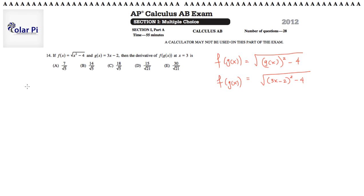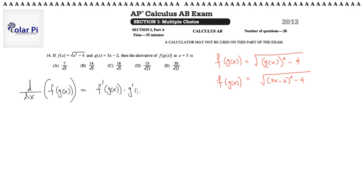Here's another way to approach it: if we are after the derivative of f of g of x, we want d/dx — which, remember, is just a fancy name for derivative — of f of g of x. We know that the chain rule says the derivative should be equal to f prime of g of x times g prime of x. That's the derivative of the outer function without changing the inner function, times the derivative of the inner function.